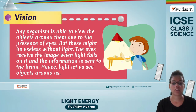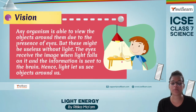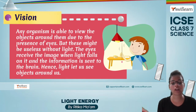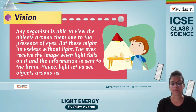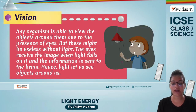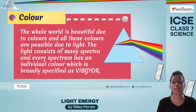Next is vision. We are able to view objects around us due to the presence of both eyes and light — we won't be able to see any object with eyes alone but without light. Eye and light are both equally useful. The eye receives the image when light falls on any object, this information is sent to the brain, our brain processes it, and that is how light enables us to see the objects around us.